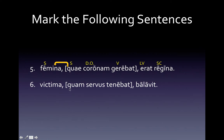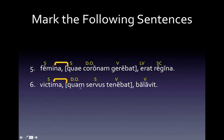Number six: 'quam' through 'tenabat' is our relative clause because it begins with a relative pronoun and ends with a verb. Here is everything marked. 'Quam' is accusative — therefore it's the direct object within its own clause. It is feminine and singular. So we look outside the relative clause: 'victima' is feminine singular, therefore it's the antecedent. This sentence is going to read: 'the victim which the slave was holding bleated.'